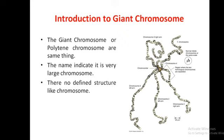Introduction to giant chromosomes: the giant chromosomes, or polytene chromosomes, are the same thing. The name indicates that these are very large chromosomes, and there is no defined structure like regular chromosomes.